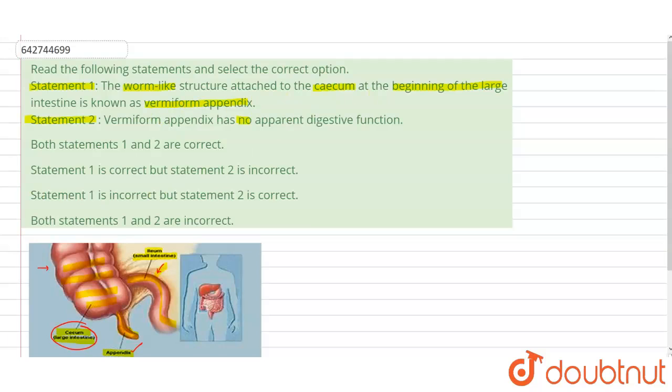large intestine is the vermiform appendix. So we can say that statement number one is correct statement and the diagram here justifies the statement number one. Right.